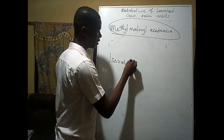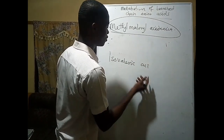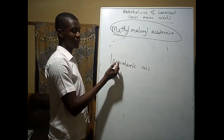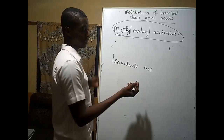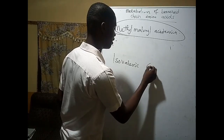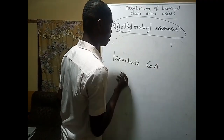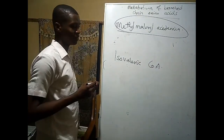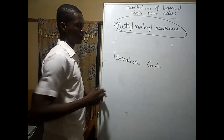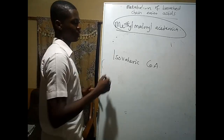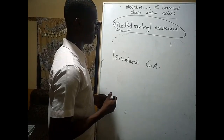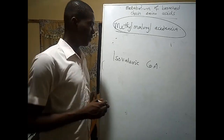The next condition is isovaleric acidemia — an accumulation of isovaleryl-CoA, which arises from the metabolism of leucine. This means the person likely also lacks the relevant alpha-keto acid dehydrogenase activity, leading to the accumulation of isovaleryl-CoA.